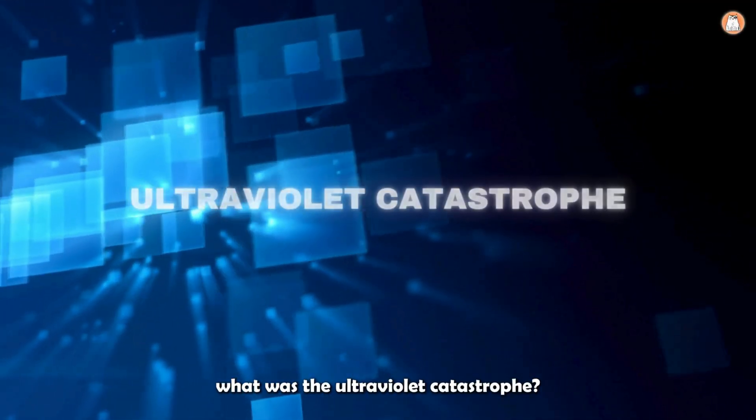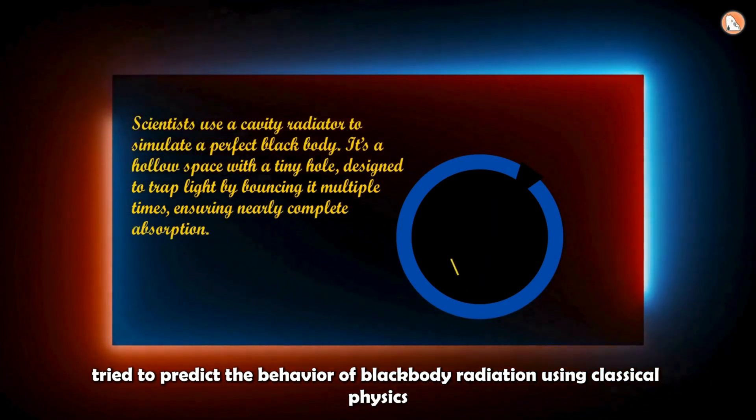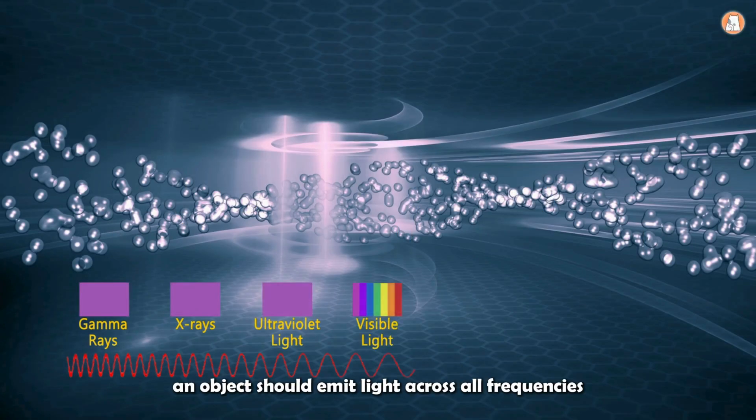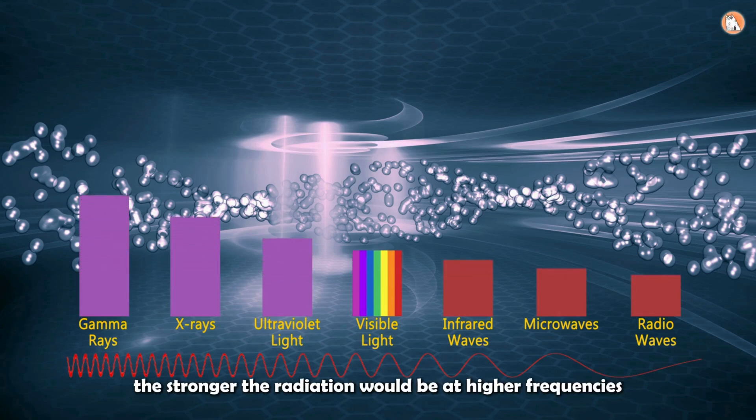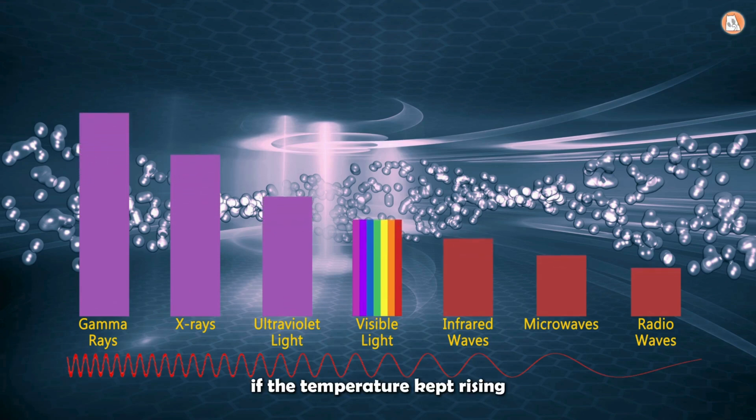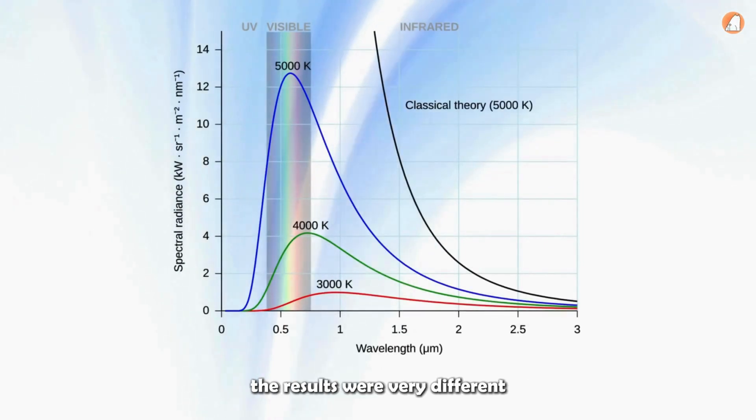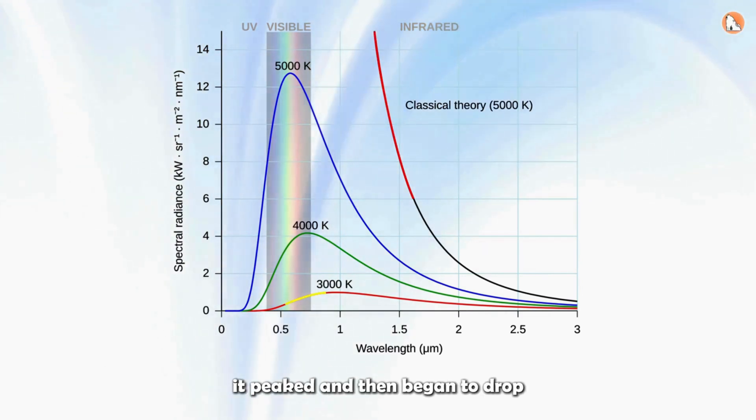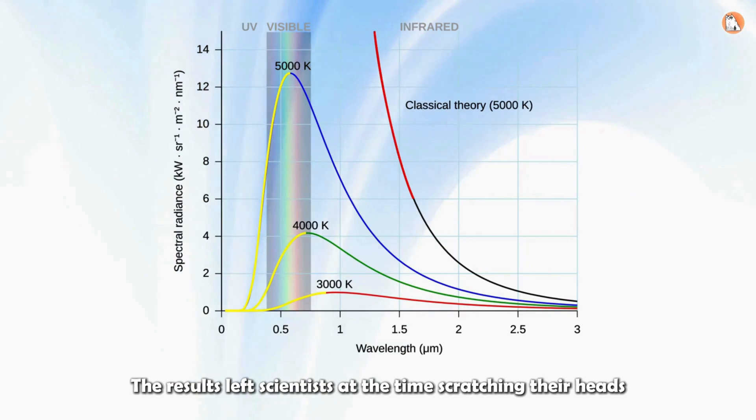So, what was the ultraviolet catastrophe? Scientists at the time tried to predict the behavior of blackbody radiation using classical physics, particularly the light emitted at different temperatures. According to classical theory, an object should emit light across all frequencies, and the higher the temperature, the stronger the radiation would be at higher frequencies, like ultraviolet light. In theory, if the temperature kept rising, the amount of ultraviolet light emitted would increase without limit. But when experiments were conducted, the results were very different. Instead of radiation continuing to increase infinitely in the ultraviolet region, it peaked and then began to drop. This was the ultraviolet catastrophe. A major discrepancy between theory and what experiments actually showed. The results left scientists at the time scratching their heads.